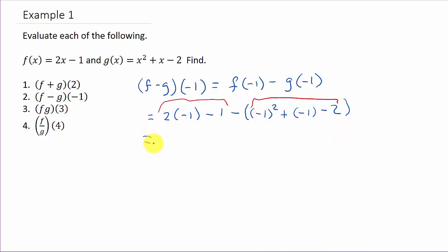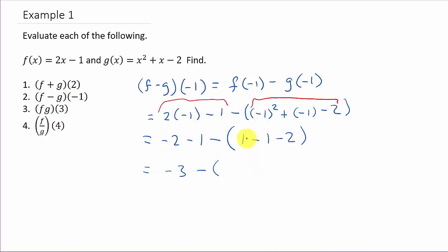So that's going to give us negative 2 minus 1, minus — and negative 1 squared is 1, minus 1, minus 2. This gives us negative 3, minus — 1 minus 1 is 0, minus 2 is negative 2. So that's negative 3 plus 2, which equals negative 1.